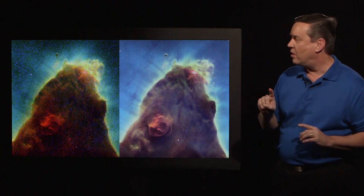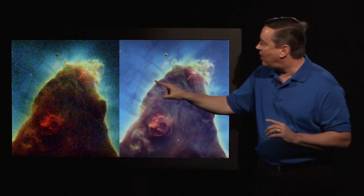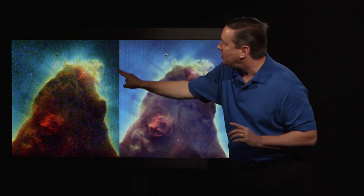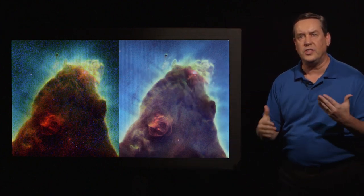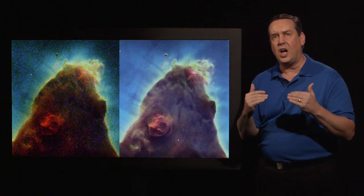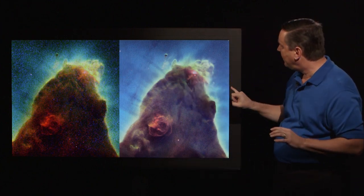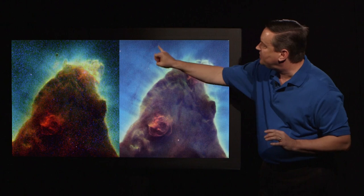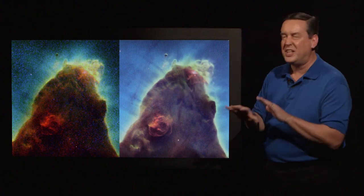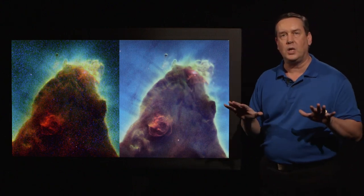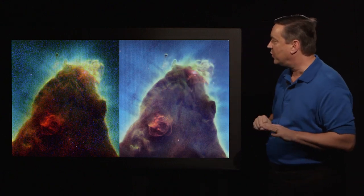The other thing you notice is that around the tops of the pillar, you can see sort of a speckling. We call this noise — the low-level brightness of an image. There is noise in the WFC3 image, but it's at a much lower level. It looks a lot smoother.